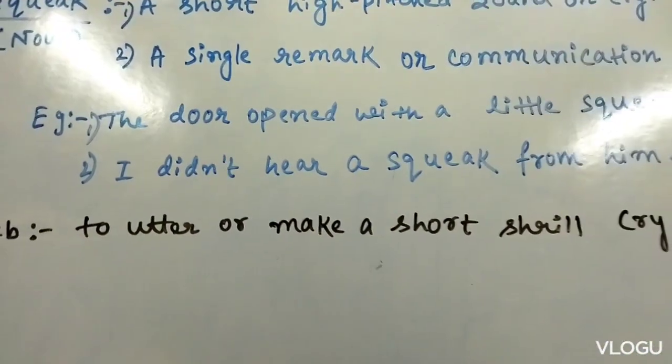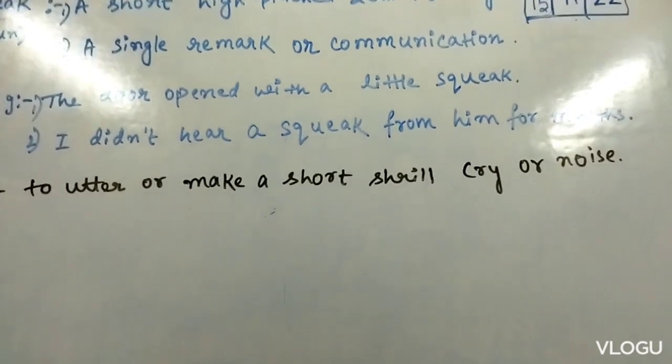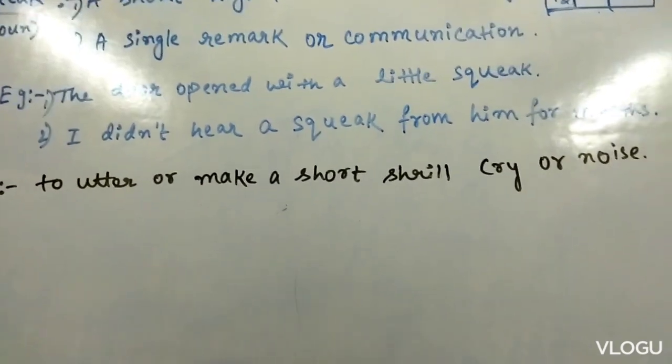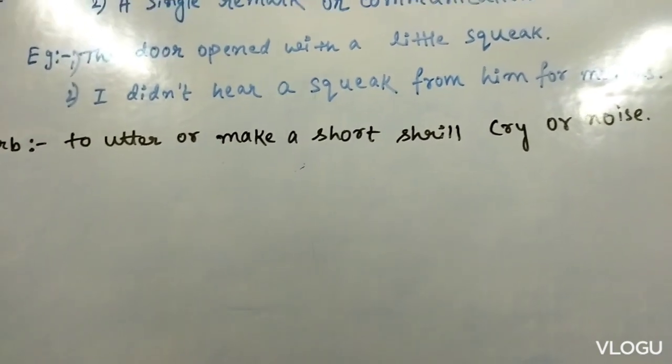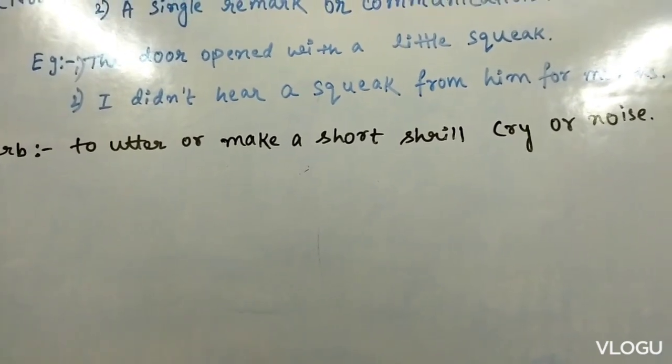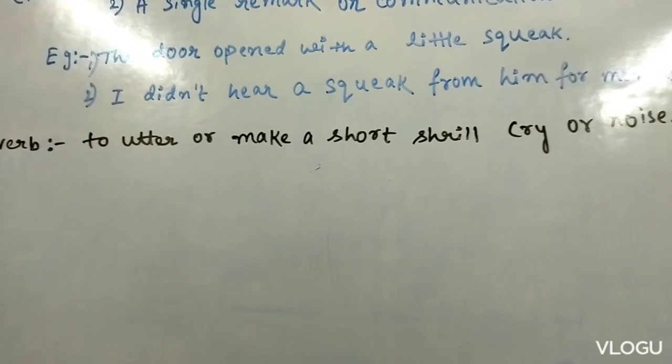And when we use it as a verb, we use its meaning as to utter or make a short, shrill cry or noise. Hence, we are uttering the shrill, uttering the cry. That is, we are doing something, that is verb. And only the sound is noun.